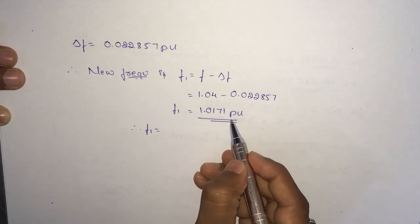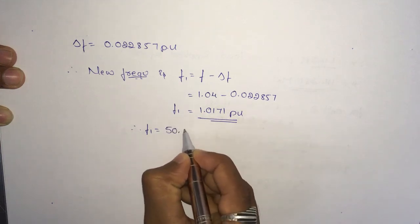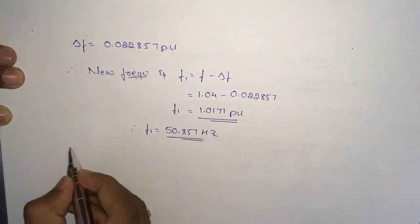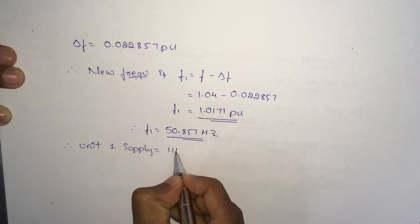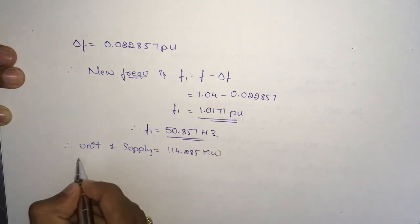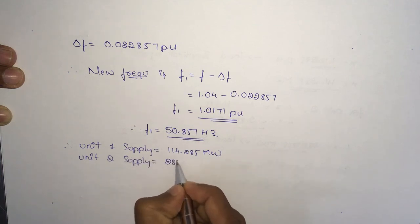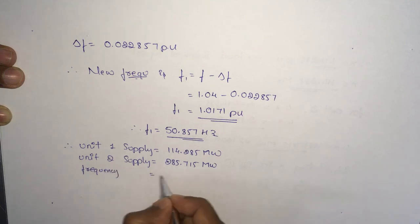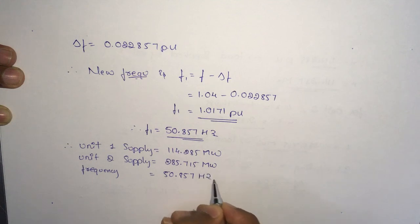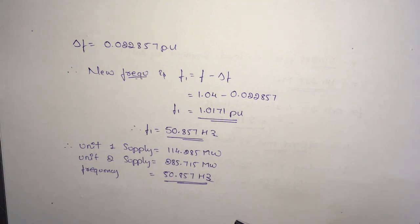Therefore, unit 1 supplies 114.285 megawatt, unit 2 supplies 285.715 megawatt, and the system frequency is 50.857 Hertz. Thank you for watching — if you have any doubts, please put a comment in the comment box and we'll discuss.